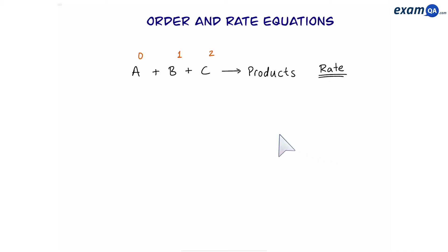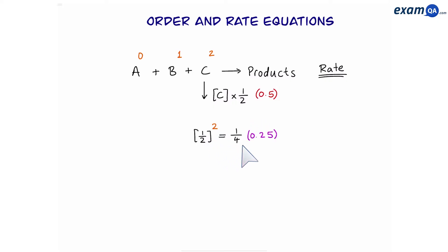Here's one final example. What if we half the concentration of C — times it by 0.5? Half squared equals one over four, so the rate will become one over four times faster, or in other words, become four times slower. Again, it's still squared. So in second order, if you increase the concentration, the rate increases by a squared value, so it gets even faster. And if you decrease the concentration, the rate gets even slower, as we saw in this example.